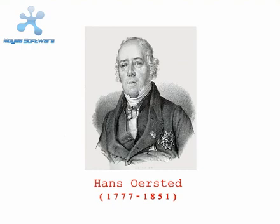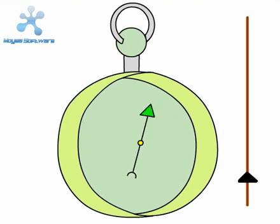In 1820, Hans Orsted of Denmark discovered the relationship between electricity and magnetism.